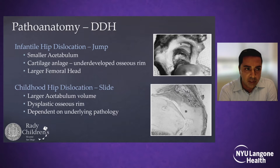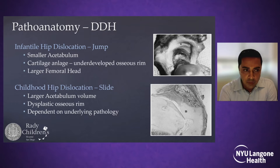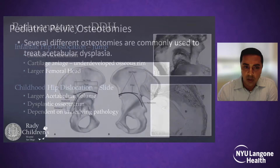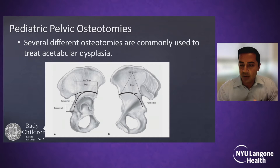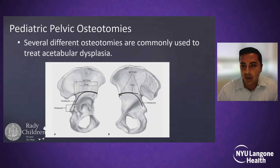Something referred to as a jump dislocation or infantile hip dislocation, where the acetabulum is smaller in size and the femoral head tends to be larger, versus the childhood dislocations, which may be considered as a slide — they tend to have a larger acetabular volume. So basically, when you're approaching a child and trying to decide whether or not a pelvic osteotomy is required, you need to figure out exactly the type of dysplasia they have and how your intervention can affect that pelvis.